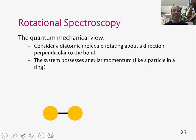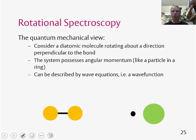This system possesses angular momentum, a bit like a particle in a ring, so we can actually represent it in a simpler way by thinking about an object moving around a fixed point. This system can be described using a wave function, and once we have the wave function, we can solve the Schrödinger equation and get energy levels.